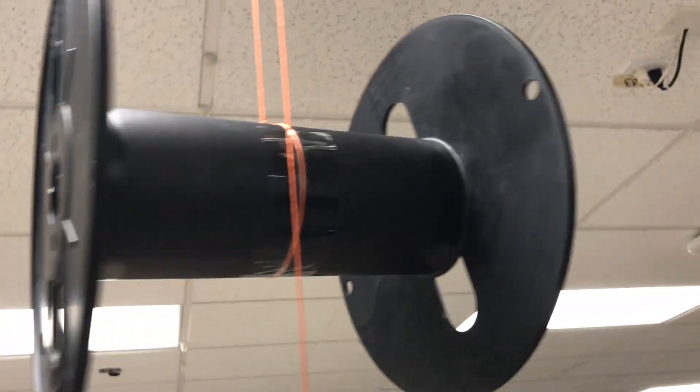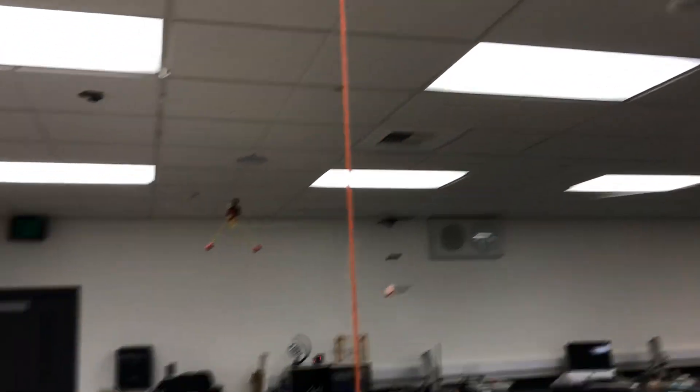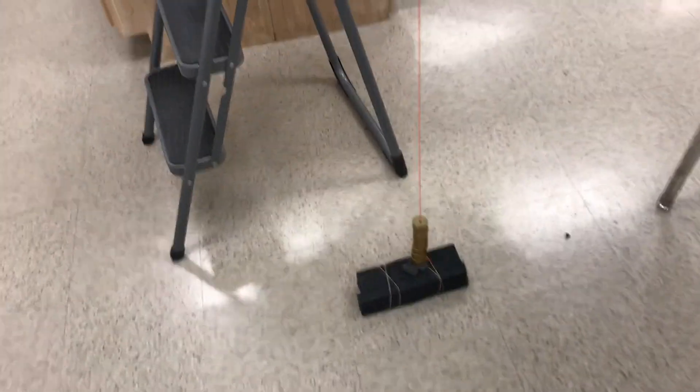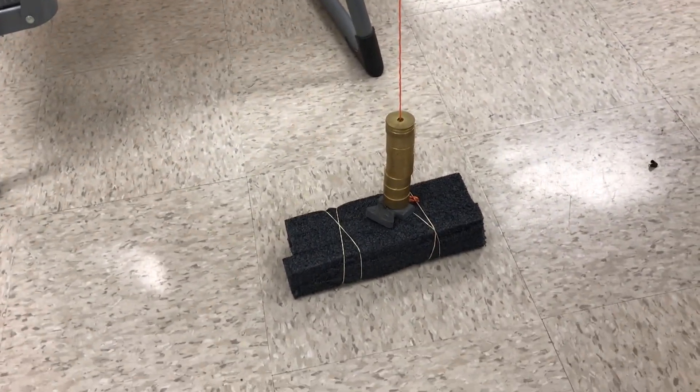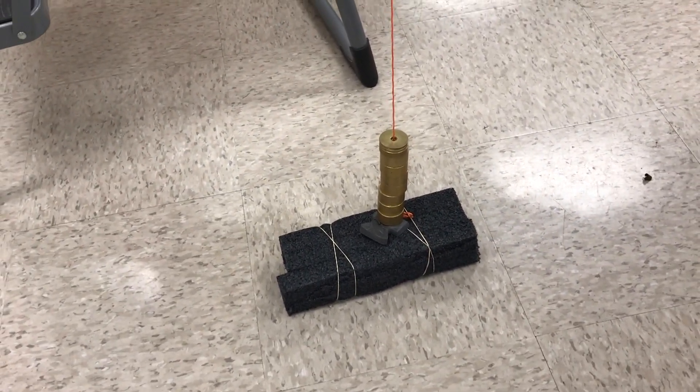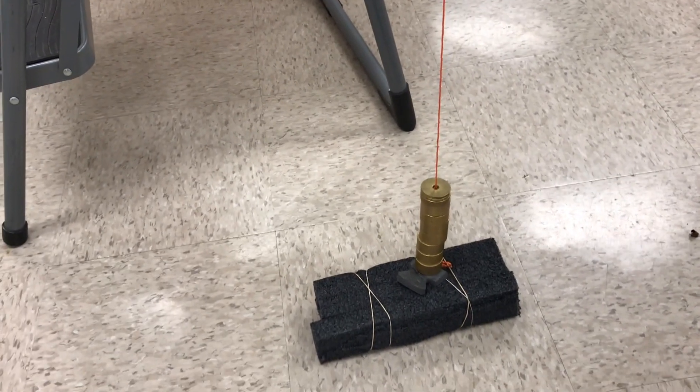One end is tied to the giant yo-yo and you can see I have it taped so it doesn't slip. You could just tie it tighter but that tape seems to work. Then the string goes all the way down to the unknown mass we'll be solving for, and I have it land on a cushion.